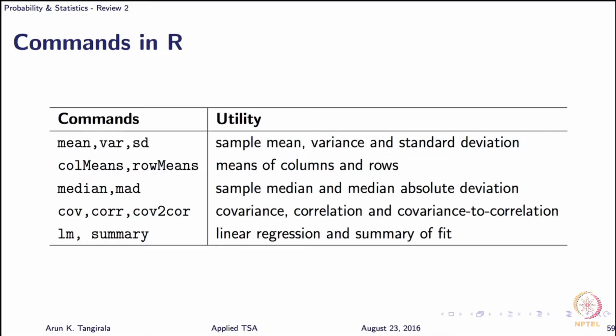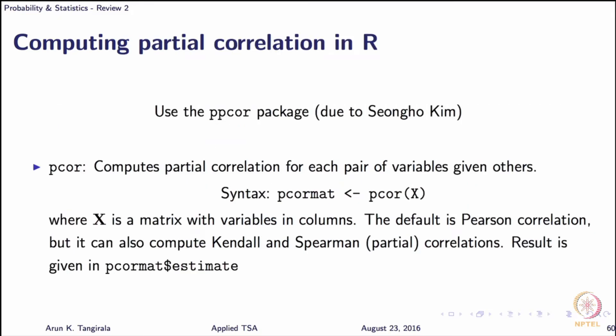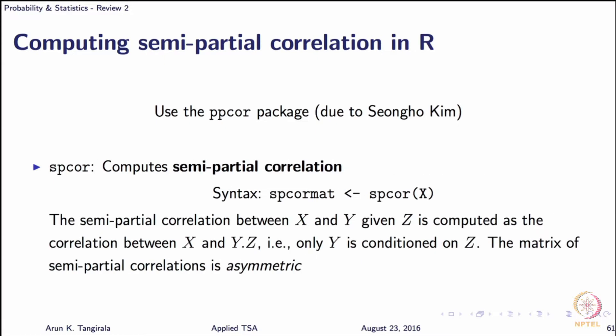And of course, we have used COV, CORR and COV to COR. I think it should be COR, not probably COR, right. And then I have shown you already how to use LM for performing linear regression and summary to display the summary of the regression that you perform. Now, we have also illustrated to you how to compute partial correlations in R using this PPCOR package. And finally, there is also the semi-partial correlation where you condition only one variable on the other one.